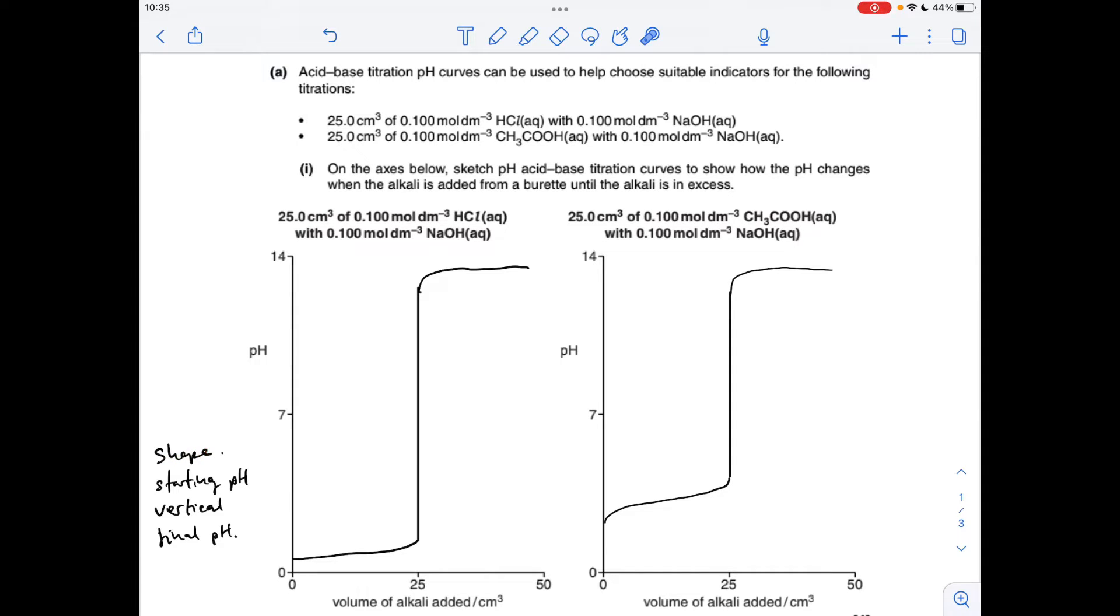the shapes of the curves. So for the HCl NaOH one, so strong acid with a strong alkali, you've got this classic shape where it starts very low, vertical, goes to a very high pH because we've got strong acid and strong base.